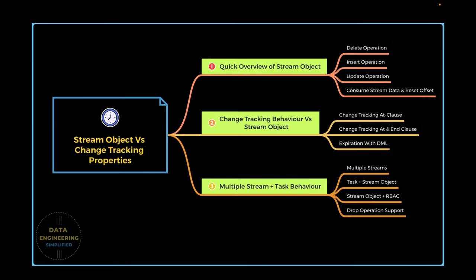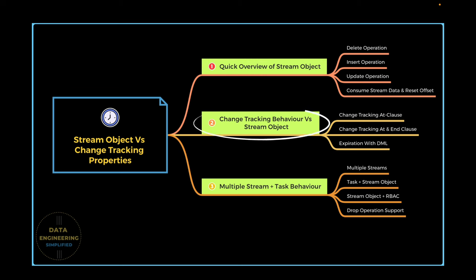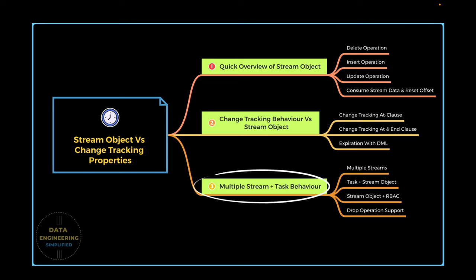In this quick video, we will cover the following things. The first part will show how the stream object works with a simple example, performing delete, insert, and update operations, and consuming CDC data from the stream object. The next part will focus on how change tracking property works and how it differs from the stream object, making it clear when to use one over the other.